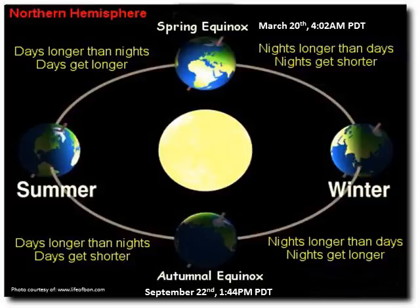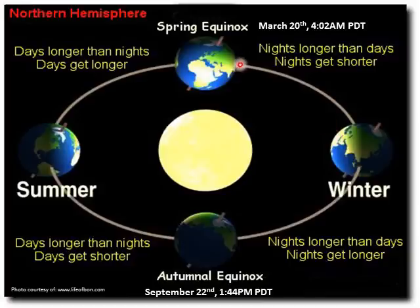This graphic shows the Earth's tilt in its orbit around the sun. The tilt leads to our changing seasons and the amount of daylight through the year. We are currently moving from the winter solstice towards the spring equinox. Our spring equinox will occur at 4:02 a.m. on March 20th.